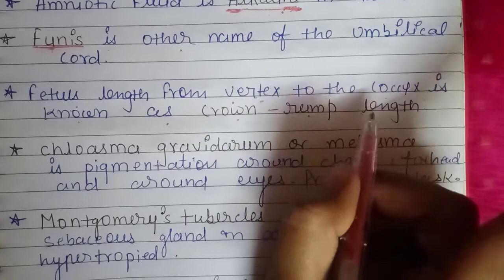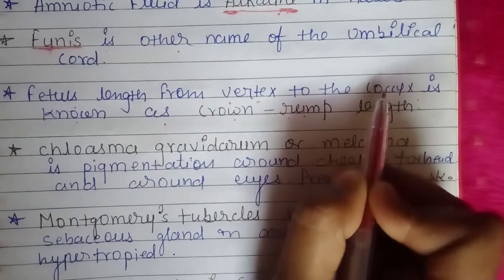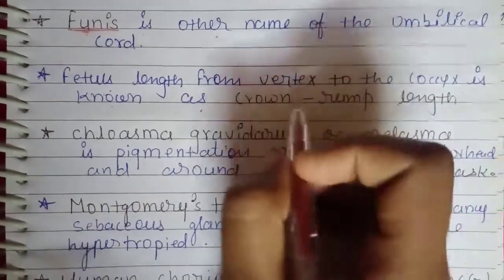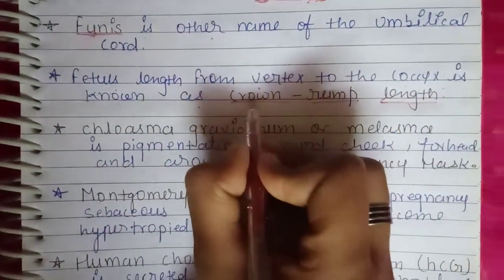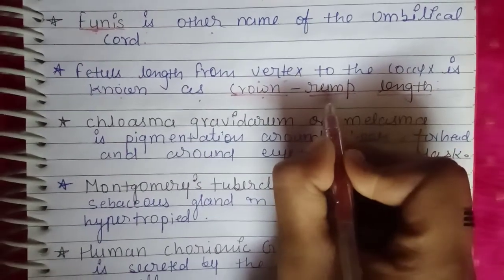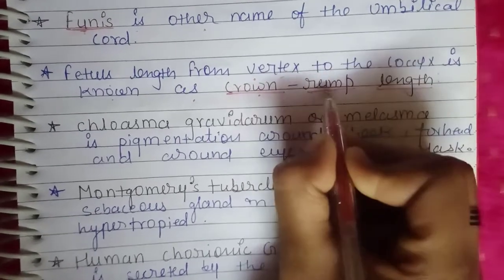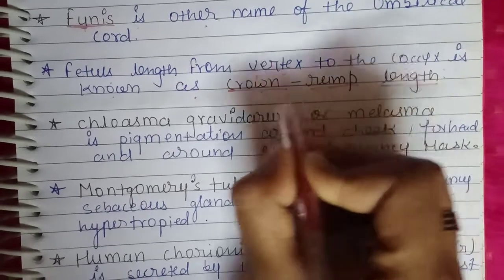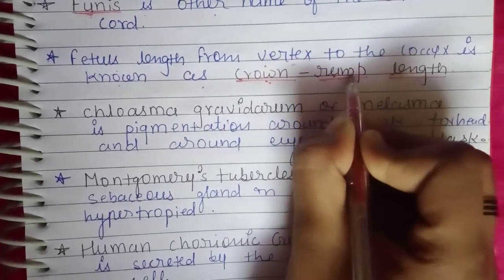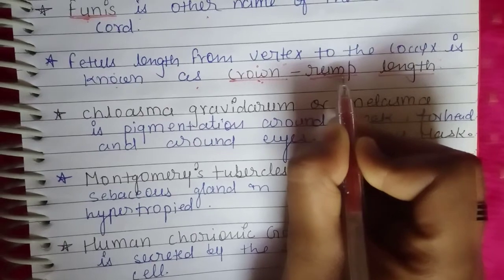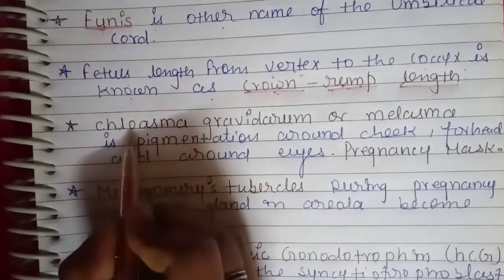If a question asks about the length of a fetus from vertex to coccyx, the answer is crown rump length. You can remember it this way: 'crown' relates to the head (vertex), and 'rump' correlates to nearby the bum, which is our coccyx. So crown means vertex and rump means related to the coccyx area.